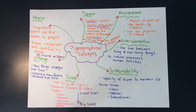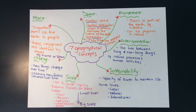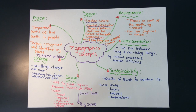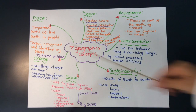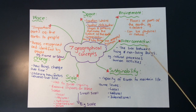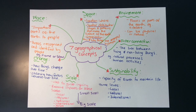Hey, welcome to a geography master class. Today we're going to learn about seven concepts that geographers use regularly. My name is Mr. Saligaris and this is part of my Year 8 geography course. These are the seven concepts we're going to learn about today: place, space, environment, interconnection, sustainability, scale, and change.